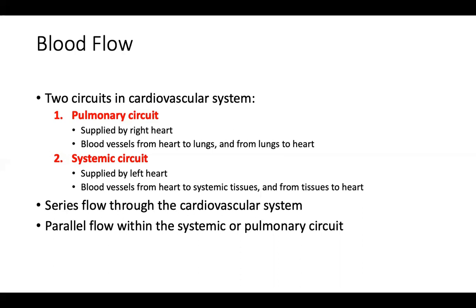There are two descriptions for flow through the cardiovascular system: series flow and parallel flow. Series flow is what happens when blood moves through the entire cardiovascular system. It has to make a stop at each location — from the heart to the systemic circulation, to the right side of the heart, to the pulmonary circulation, and back to the left side of the heart. All of the blood has to do that. That is called the series circulation.